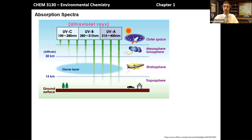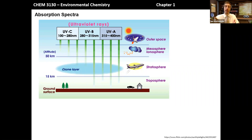UV light itself — ultraviolet light — is split into three regions. There's UV-C, which is about 100 nanometers to 280 nanometers. UV-B is from 280 to about 315, and then UV-A is about 315 to 400. You've probably heard of some of the problems with UV light, and also sometimes its usefulness in certain applications.